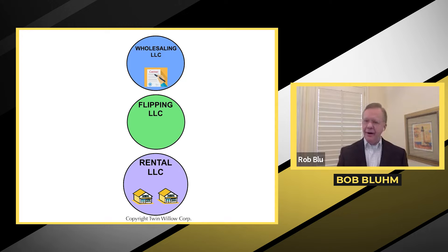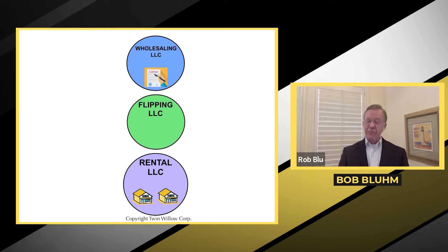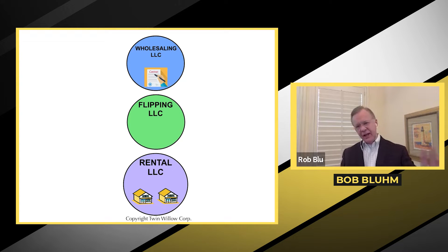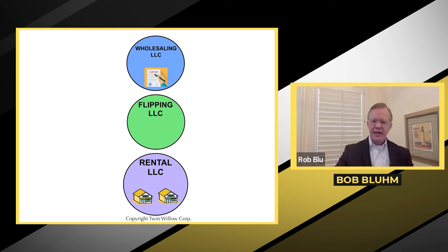The income is very different here, because we have earned income — active income from wholesaling and flipping, which is taxed a certain way — and we have passive income from rental properties, which is even more tax advantaged. So we can choose how these LLCs are taxed. The wholesaling and flipping LLCs are taxed one way, and the rental property LLC is taxed a different way.